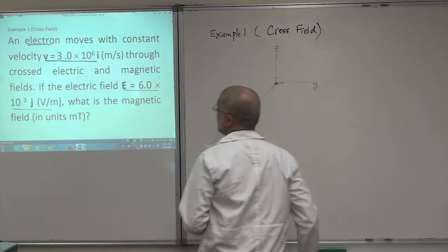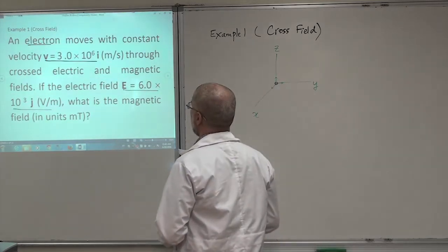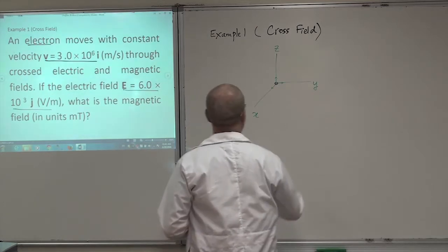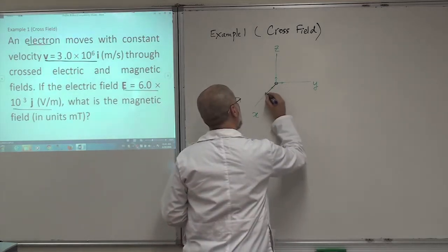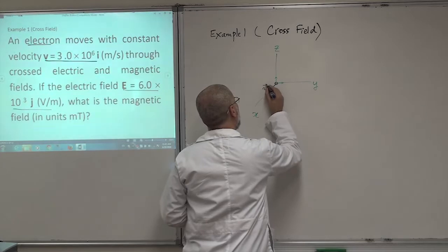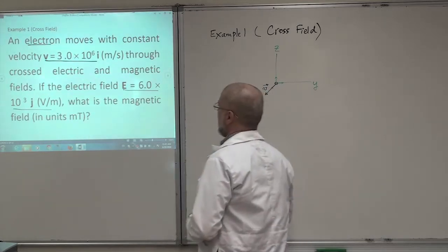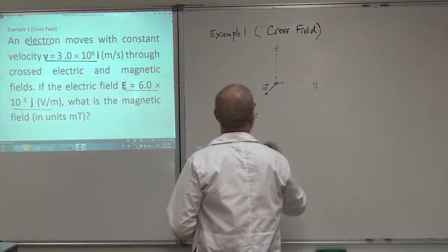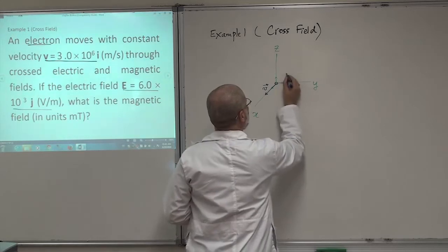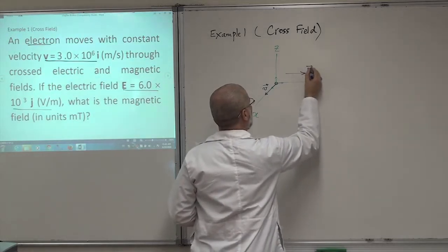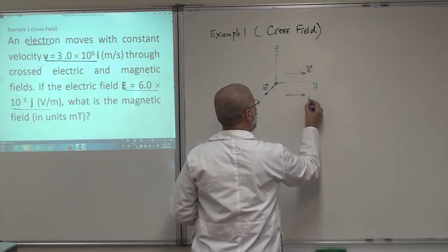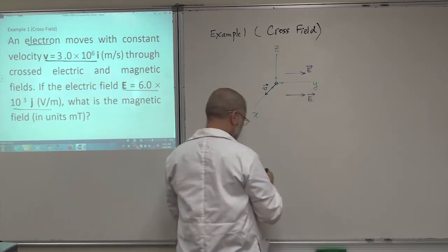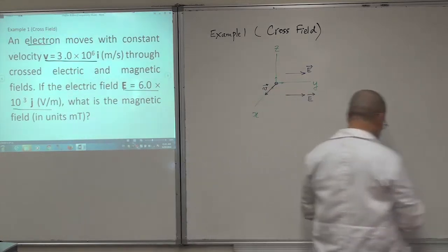Negative charge, and it has a velocity along the I. So my velocity is in this direction. That's V. And the electric field is along the J. This is the electric field here, along the J axis.